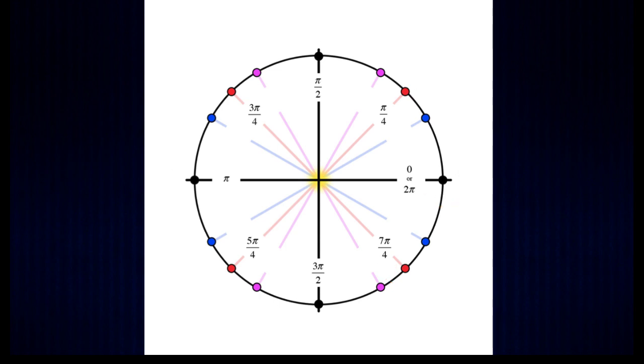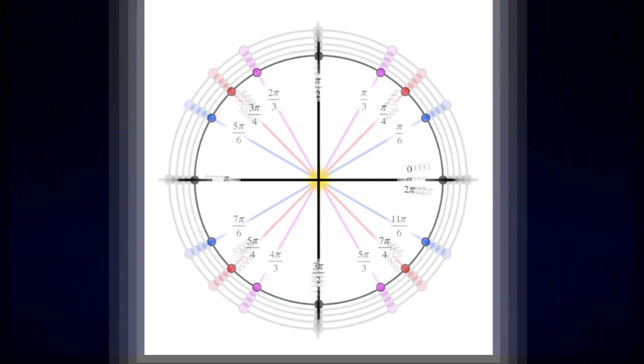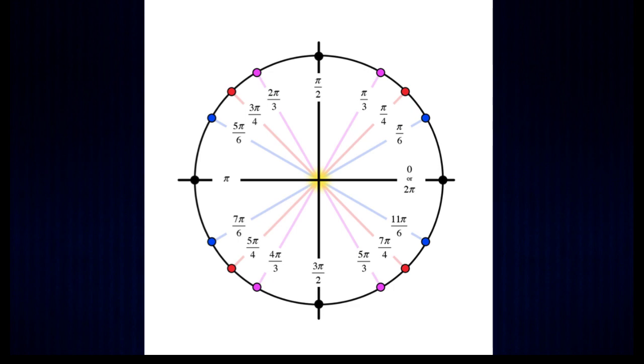Here are the angles that we created just by using an increment of pi over four. Now we can combine these angles with the angles that we created from the pi over six increment, and we're done! That's it! That's the entire unit circle! You can build it from just pi over six and pi over four.